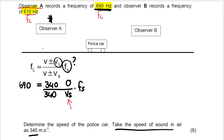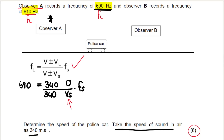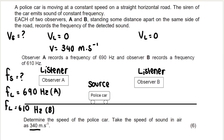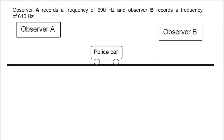Essentially what we do is write the Doppler effect formula down once — that gets you one out of the six marks. Then we substitute. Before carrying on, we need to know the direction in which the police car is moving. They don't tell us in the question whether the car is moving towards observer B or observer A.